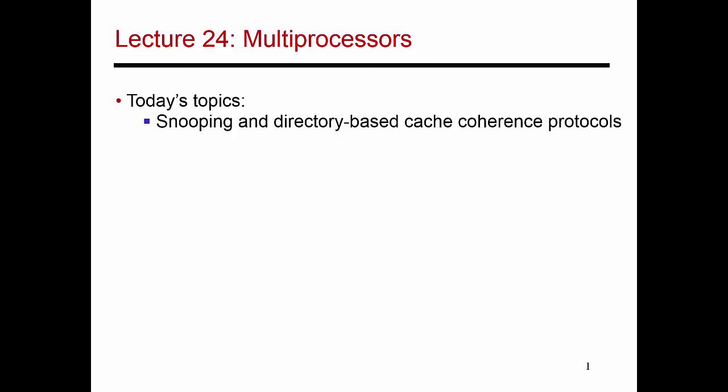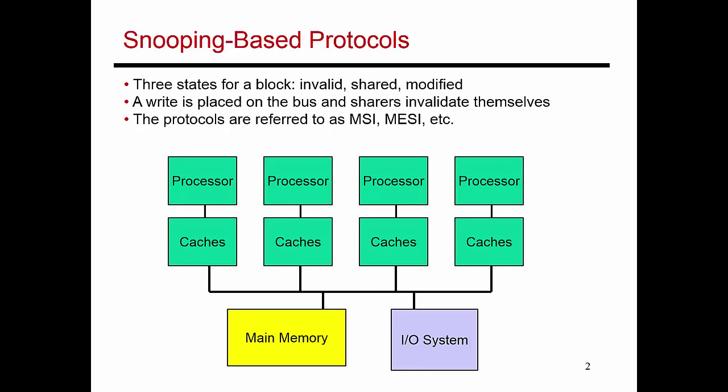Now I'm going to move on to the next big topic, which is how do you design a multiprocessor system and what is the hardware support I need to provide to make sure that programs run correctly on these multiprocessors. So let me start straight away with an example, which gives you the best view of what a multiprocessor system is going to look like and what are the potential problems that could be caused.